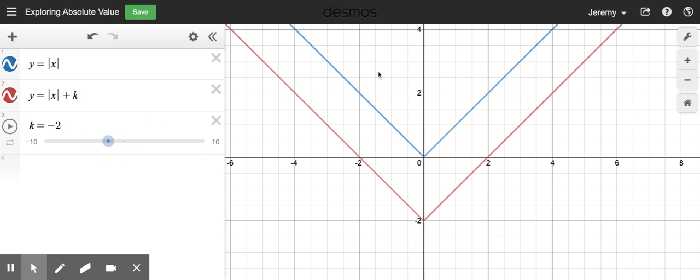Every single point on the blue graph is, in this case as it is now, shifted down by two units. Because really what we did was we took a value of X, we plugged it into this equation to get the value of Y.